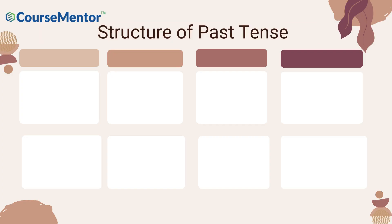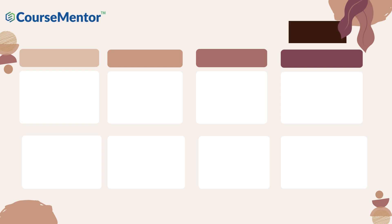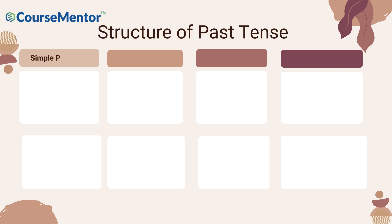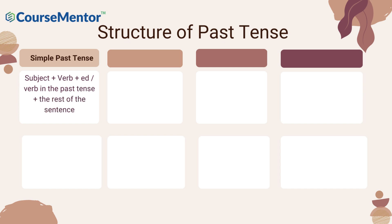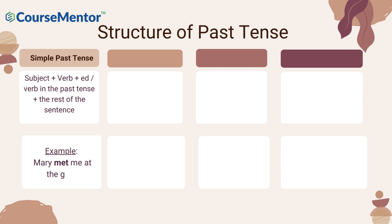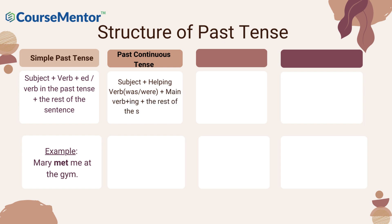Structure of past tense — look at the following table. Simple past tense: subject plus the verb in the past tense plus the rest of the sentence. For example: 'Mary met me at the gym.' Past continuous tense: subject plus helping verb 'was' or 'were' plus main verb plus '-ing' plus the rest of the sentence. For example: 'It was raining.'